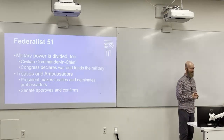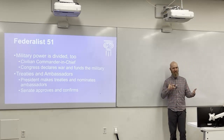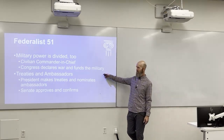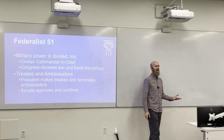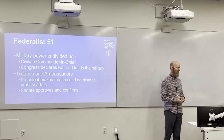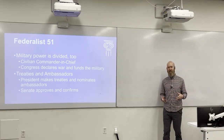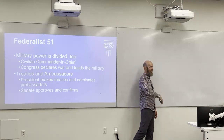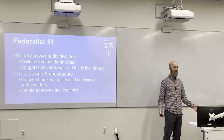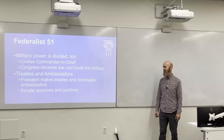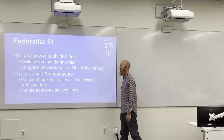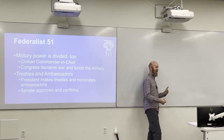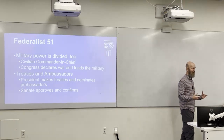Even military power is divided. The commander in chief is the president, who is in charge of the military but is not a member of it — so the president is outside the military. To stop the president and military from getting together and taking over, Congress provides the funding for the military. If the president and military tried to seize power, Congress could cut the budget. Similarly, the president makes treaties and nominates ambassadors, but the Senate has to approve them. Over and over, we have separation of powers to keep any one group from getting too powerful.